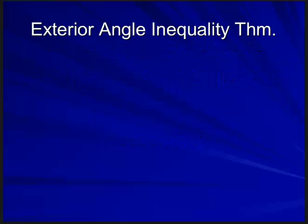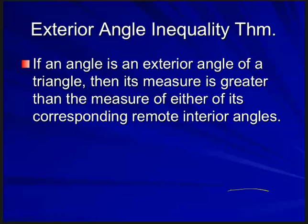Our first theorem is the exterior angle inequality theorem. Let's think about what these words mean. Exterior means outside, and you know what an angle is. The exterior angle inequality theorem states: if an angle is an exterior angle of a triangle, then its measure is greater than the measure of either of its corresponding remote interior angles.